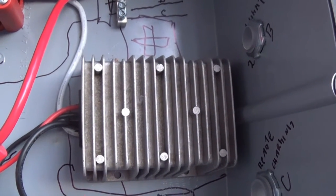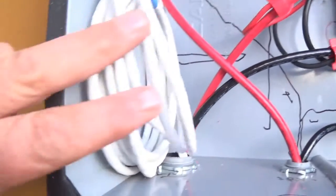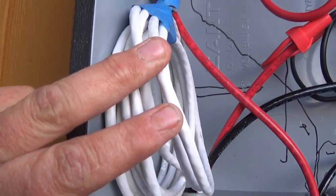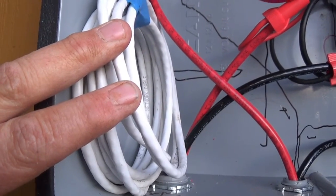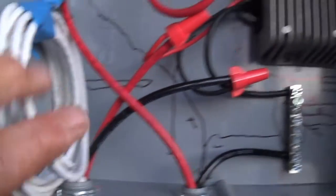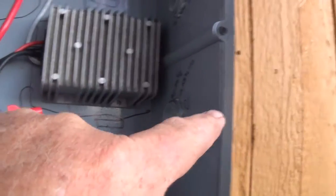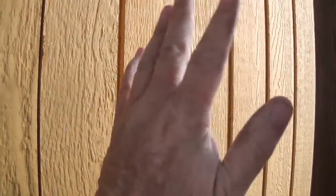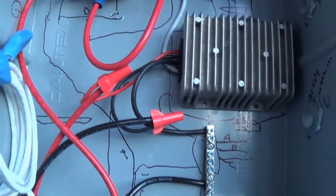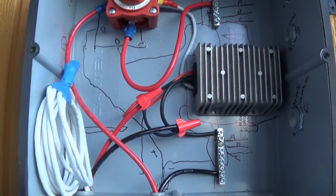This white cord here, this is going to be part of the inverter's remote. So it's going to go through one of these holes and basically right about here. When I close this deck, I'll have my inverter so I can see what my batteries are doing and everything.